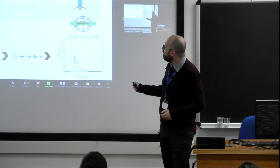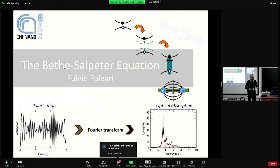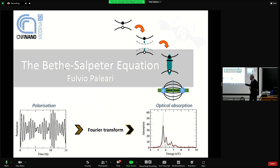In a simple band structure picture, we have a hole and an electron. As we saw yesterday with the GW method, we can compute quasi-particle corrections which typically enlarge the band gap. However, when we study neutral excitations such as light absorption by the electronic structure of a material, sometimes in semiconductors the light absorption happens at an energy that is lower than the band gap. This is because of the electron-hole interaction between the excited electron and the hole remaining in the conduction band.